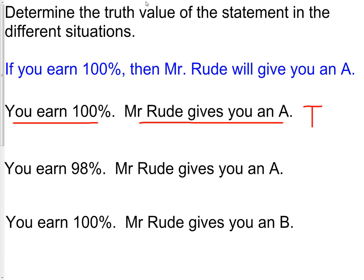So we have our true. Let's check the second statement. On the second one, you earned 98%. Mr. Rude gave you an A. This is the one to be careful of, because did this match our hypothesis? The hypothesis says if you earn 100%. In this example, we actually earned 98%. So by the rule that we have at the very beginning, we have no idea what happens when you earn 98%.